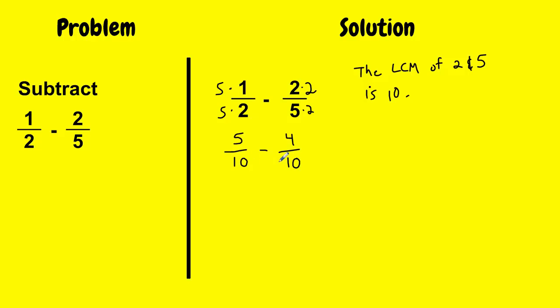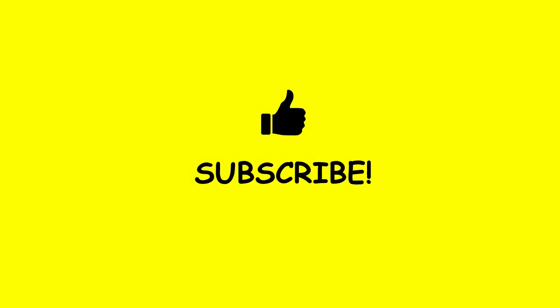Since I have the same denominators, I can subtract my numerators. So I would have 5 minus 4 over 10 and when I simplify this, I get 1 over 10. So that's how you subtract two fractions with different denominators. If you liked the video, give me a thumbs up and don't forget to subscribe.